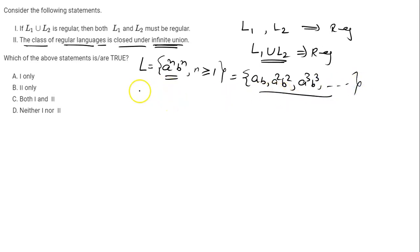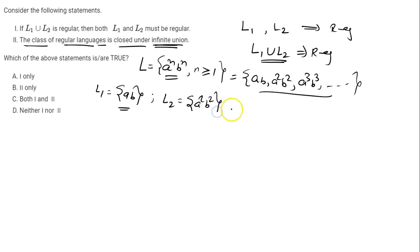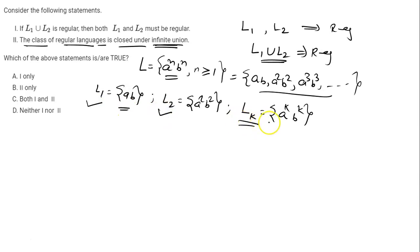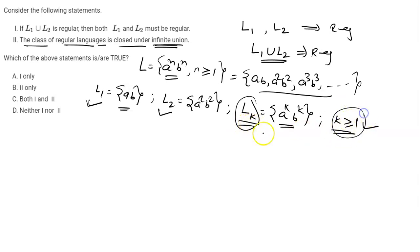This is your language L. Now what I am going to do is take language L1 containing only the string ab, L2 containing only a²b², and in general Lk containing only the single string a^k b^k. So I am taking languages L1, L2, L3, L4, L5, and so on, where k is greater than or equal to 1. Each Lk contains only one string, so each Lk is regular because every finite language is regular.